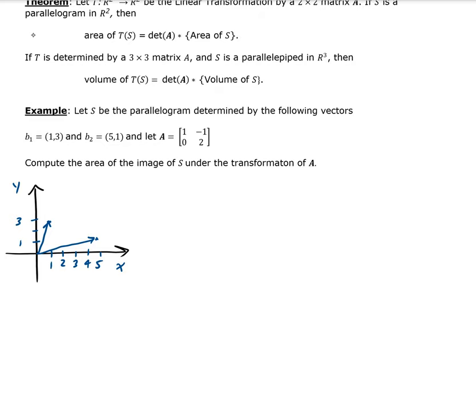From these two vectors, we can create our parallelogram. I'm going to extend this vector up here, and then this one over here. So S refers to this area of the parallelogram. We want to find the area of this parallelogram under the transformation of A.